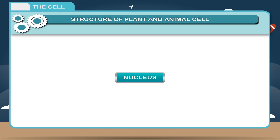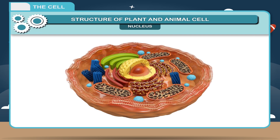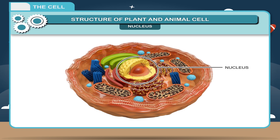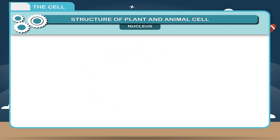Nucleus. In the cell, there is a spherical body called the nucleus which is the most important and acts as the director. Nucleus controls all the vital activities of the cell. A cell without a nucleus is considered to be dead and is not capable of growth and cell division.